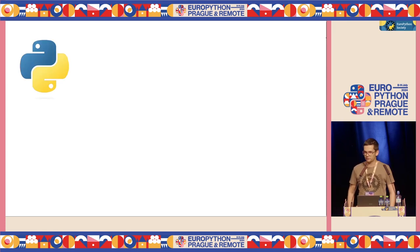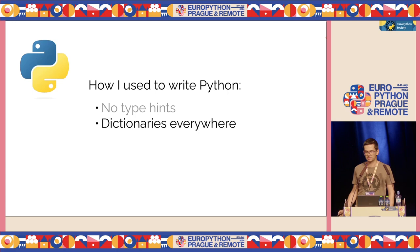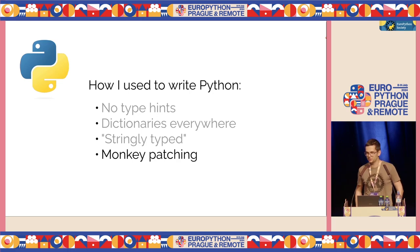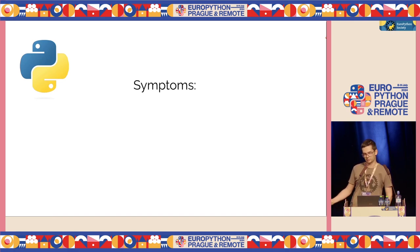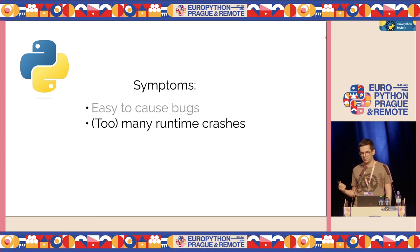I have been writing Python for more than ten years, and I always did it in a very dynamic style. I used to write Python without type hints, I used dictionaries everywhere, my code was stringly typed — not strongly typed — and I was using monkey patching and all these kinds of things. And it was fun, but I realized that this code was causing me some very bad symptoms, especially for larger programs: it was very easy to cause bugs, I had to debug too many runtime failures and crashes, which was very annoying.